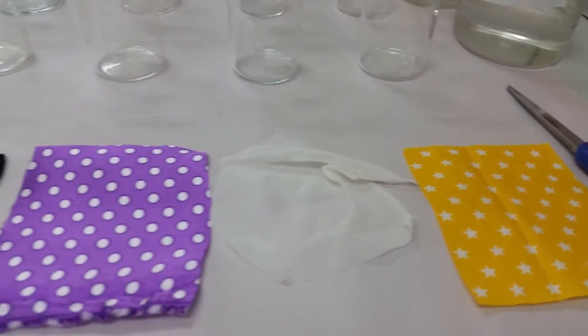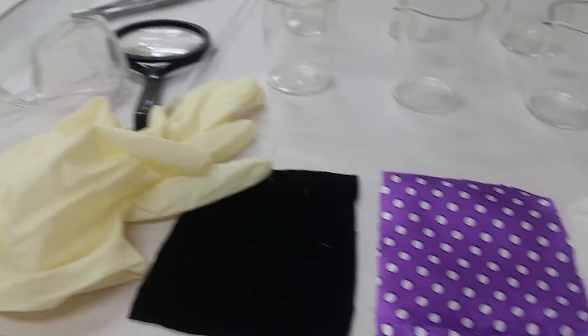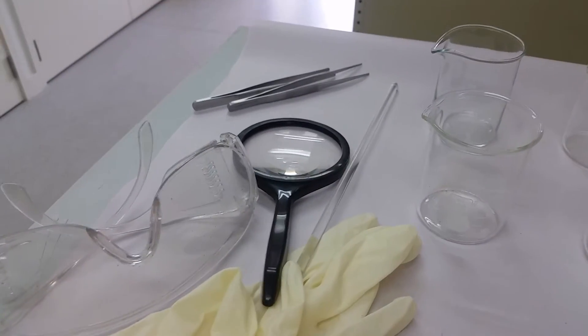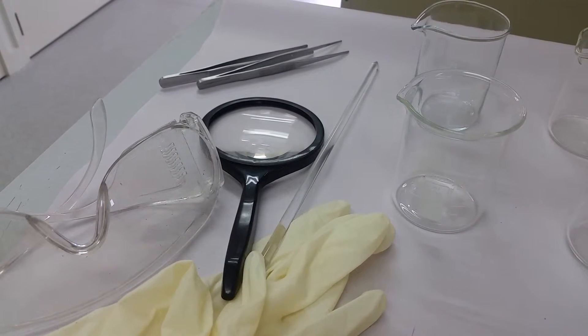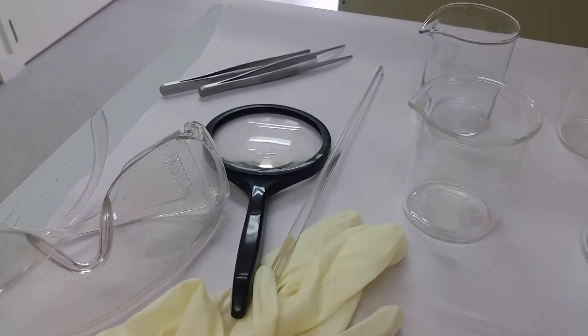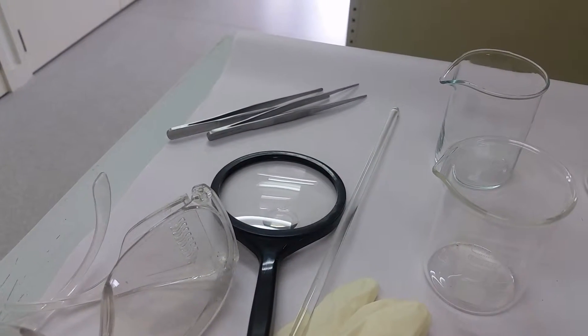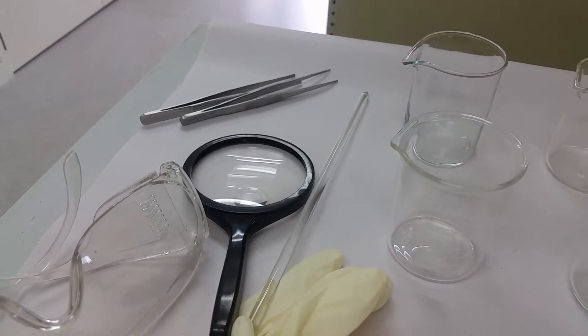I've got some gloves and eye protection, a hand lens or magnifier to check what's going to happen, and there is a glass stirring rod. I've got two forceps so that I can manipulate the materials.